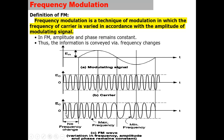Here we can see there is no frequency variation when the signal is zero. As the modulating signal increases, the frequency becomes higher. The maximum frequency is observed when the signal is at EM, its peak. Similarly, as the amplitude decreases, the frequency becomes smaller, and we observe the minimum frequency when the amplitude is at its negative peak.